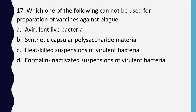Question 17. Which one of the following cannot be used for preparation of vaccines against plague? Correct answer is option C: heat-killed suspension of virulent bacteria.